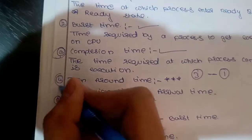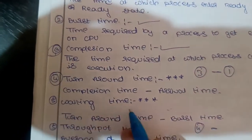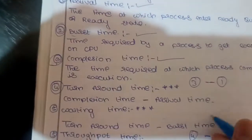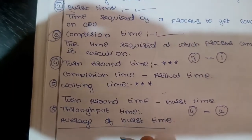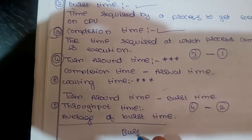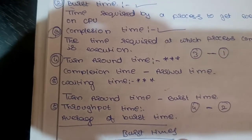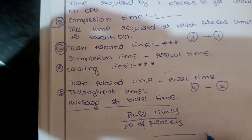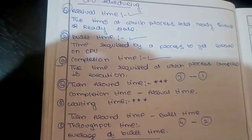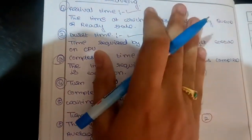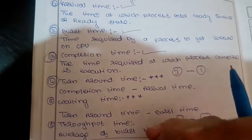Arrival time is the time at which the process arrives in the ready queue. Burst time is how much time the process takes to execute in the CPU. Completion time is the time at which the process completes. Turnaround time equals completion time minus arrival time. Waiting time equals turnaround time minus burst time.